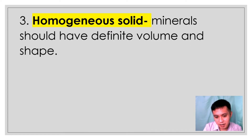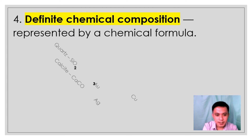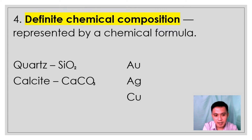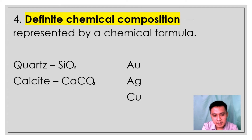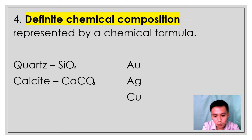The fourth characteristic of minerals is that they have definite chemical composition. Meaning they are represented by a chemical formula. A mineral always contains certain elements in definite proportion. For example, quartz — its chemical formula is SiO2, meaning the mineral quartz has one atom of silicon for every two atoms of oxygen. Next is calcite — Ca, C, and O: Ca for calcium, C for carbon, and O for oxygen. Almost all minerals are compounds, meaning they are made of two or more different elements bonded together. However, some minerals are made of one element, such as gold, silver, and copper.